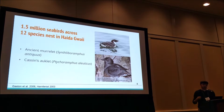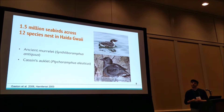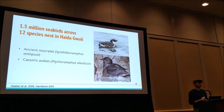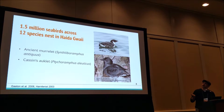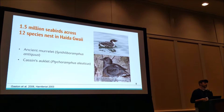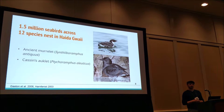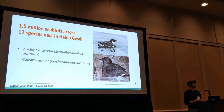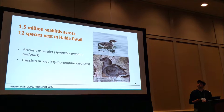Haida Gwai is really known for its high levels of unique biodiversity, and this includes a very large contingent of seabirds. There are about 1.5 million seabirds that nest across the archipelago. In the cases of the ancient murrelet and the Cassin's auklet, this can incorporate up to half of their global breeding population. So threats to these species are not just a local issue, but one of species persistence.